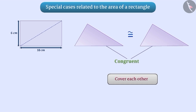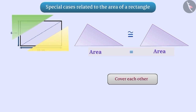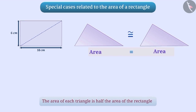Both the triangles are congruent. Since they cover each other completely and exactly, we can also say that both triangles are equal in area. Since the rectangle in question is being divided into two equal parts, we can say that the area of each triangle is half the area of the rectangle.